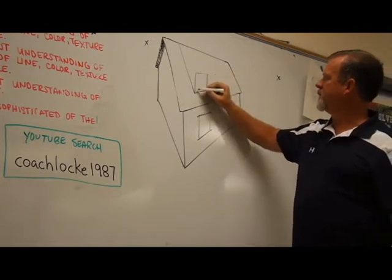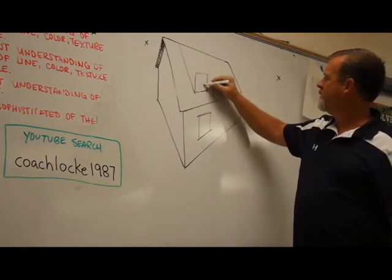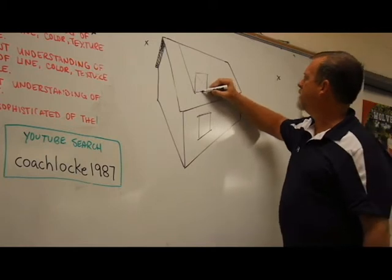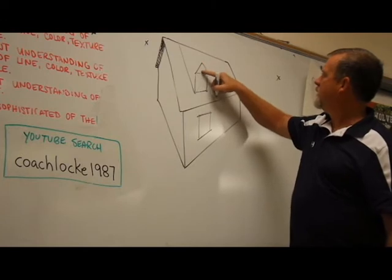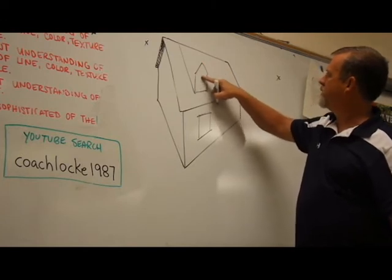So we continue on with our window just like we would at an end of a house. We do our center point, we do our vertical line up, we pull our peak down, and this gives us this whole front shape right here.